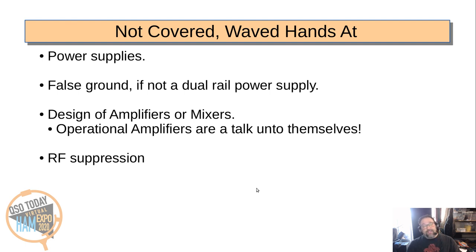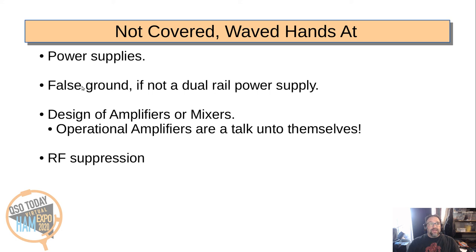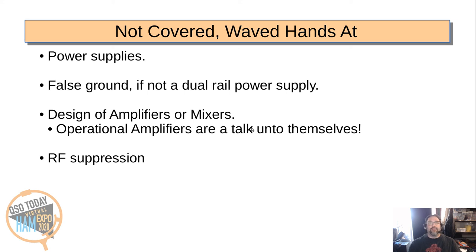Things I haven't covered: I've hand-waved at an awful lot. Most notably, I haven't talked about power supplies at all — whether using a 0 to 12V supply or a plus-and-minus supply. If you don't have plus and minus voltage supplies but you have ground-referenced signals, you need to create a false ground. I also haven't talked about the design of amplifiers or mixers — op amps are a talk unto themselves, another 30 minutes at least. And I haven't talked about RF suppression: we're working in an RF environment with amplifiers, and if RF gets into the wrong place, those amplifiers will turn into oscillators and nobody wants that.